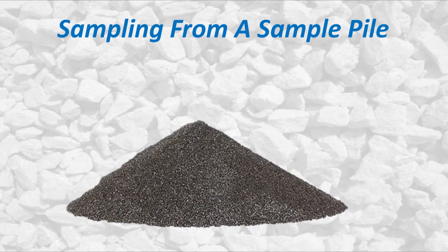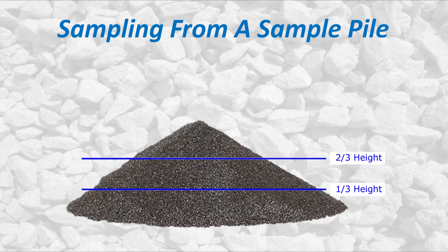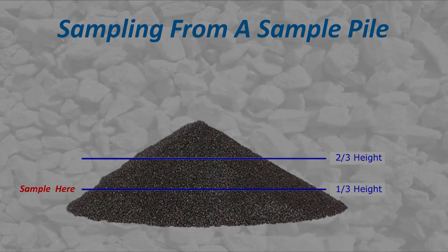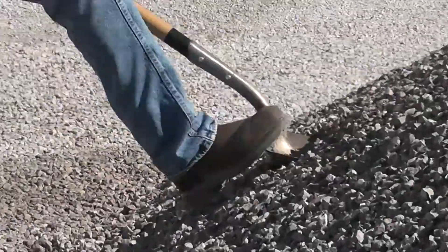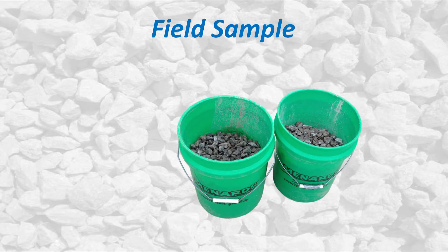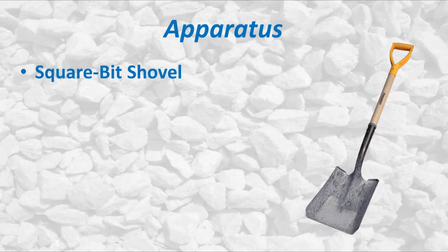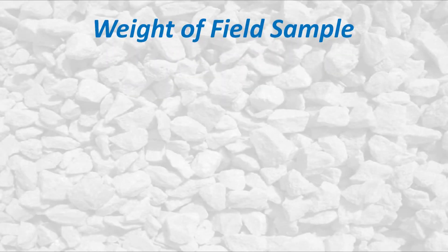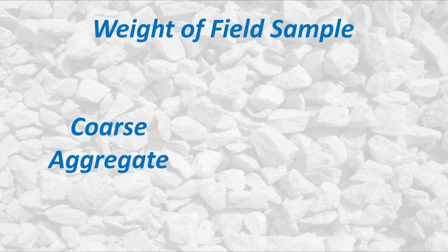The sampling points on the sample pile are taken at the height that represents the center of the volume of the pile. Since the sample pile is essentially conical in shape, that height is approximately one-third the height of the sample pile. At a minimum, six full shovels of material will be removed from the sample pile at equal increments around the pile. These samples in total will represent the field sample of the coarse aggregate. A square bit shovel is used for this part of the procedure, and must be adequate in size to meet the minimum weight requirements of the test to be conducted on the sample.